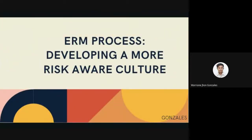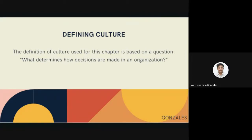Good afternoon. I am Warren Jan Gonzalez. We will now discuss the ERM process: developing a more risk-aware culture. Nothing is more crucial to the success of ERM than an informed and supportive culture. Culture can be defined based on the question: what determines how decisions are made in an organization? The key to culture in the context of ERM is the impact it has on business decisions. A strong culture is one where decisions are made in a disciplined way, taking into account considerations of risk and reward. Disciplined decision making in ERM doesn't mean there is no risk involved — rather, it means decisions that create undue risk are avoided, either because they take the organization outside its defined risk appetite or because the reward is not sufficient for the risk taken.